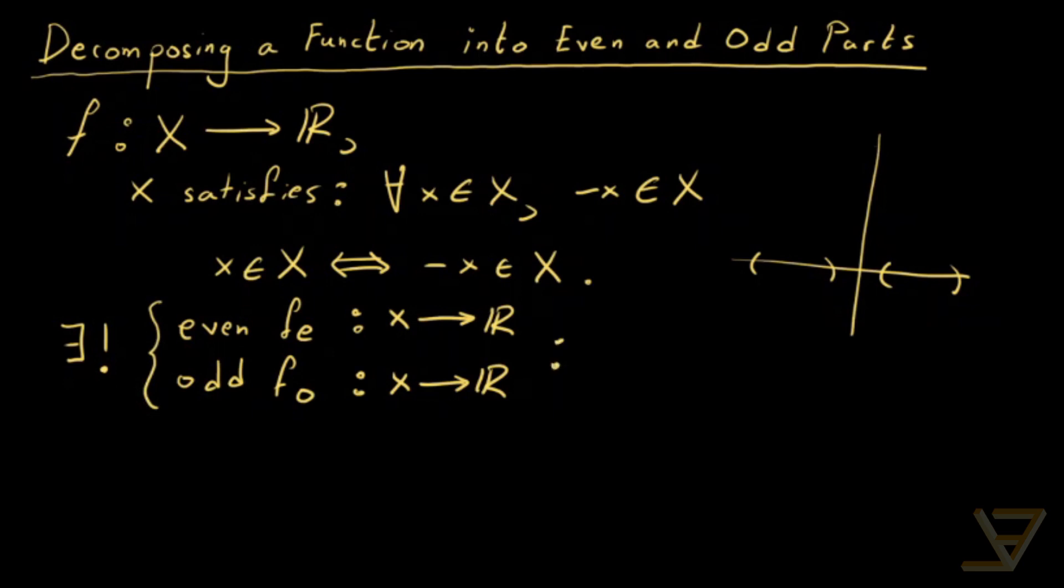And each one maps from X into the reals such that for all x in X, f of x is equal to f_e of x plus f_o of x. So we're going to be decomposing the original f into an even and odd part, and we're going to show that the even and odd parts are unique.